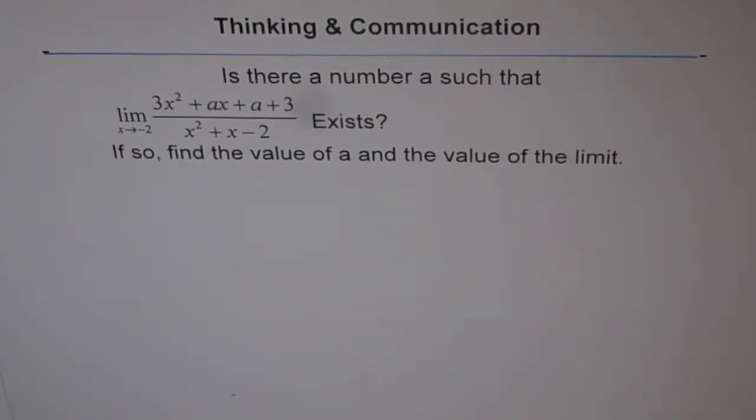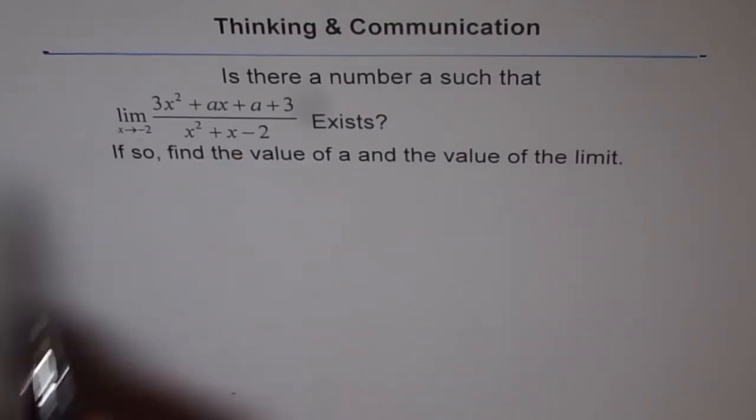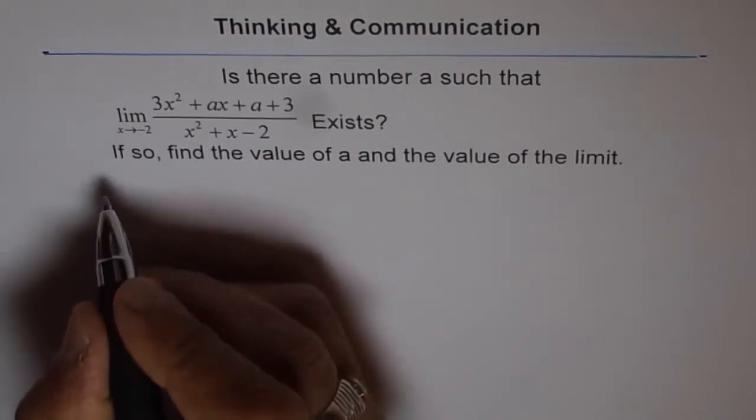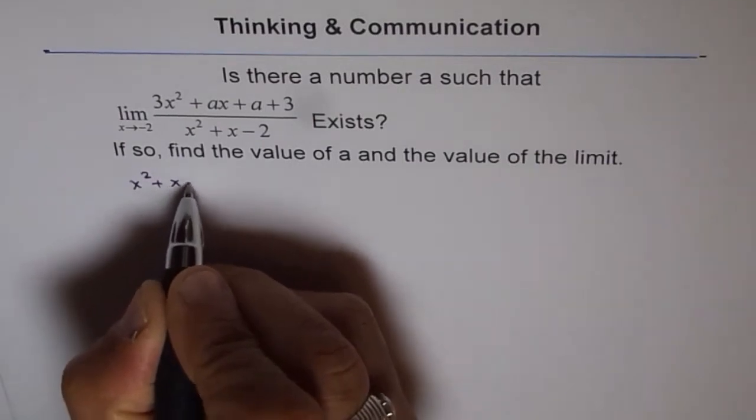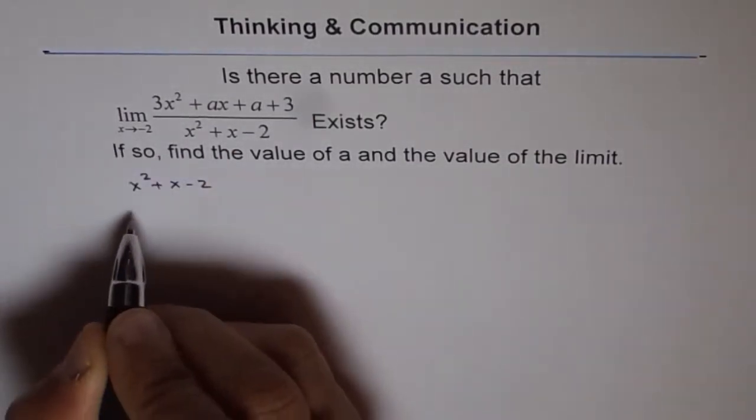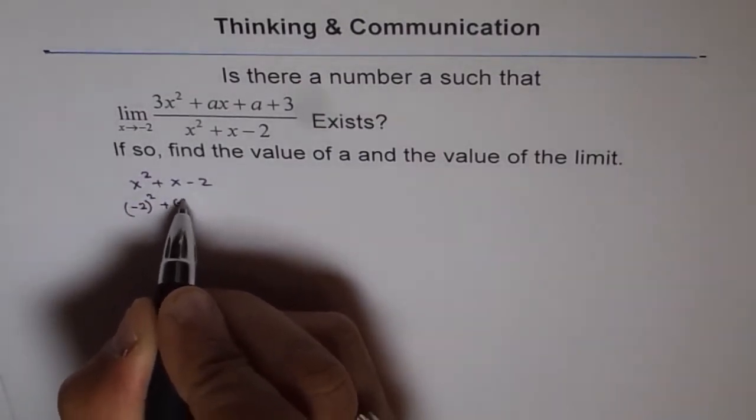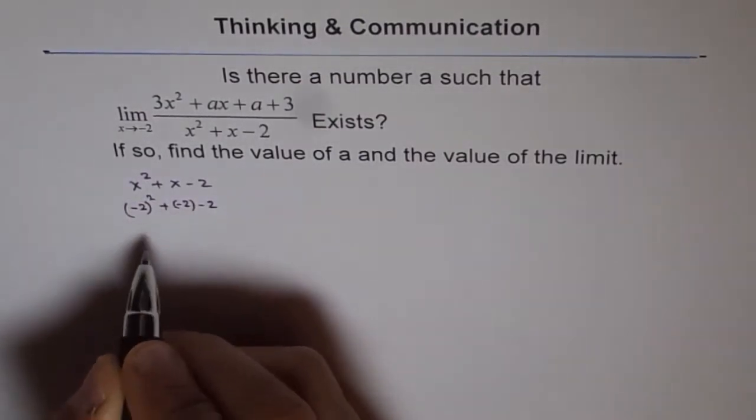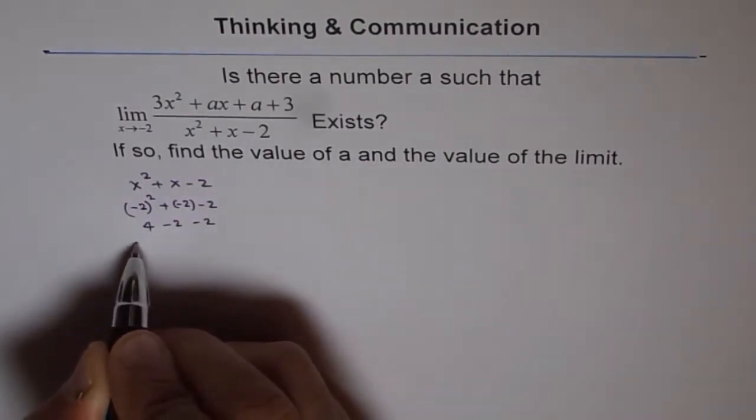This is a very interesting question and it is based on the concepts which you have been using so far. Now, let's try to examine the denominator. What happens to the denominator at x equals to minus 2? So, the denominator for us is x square plus x minus 2. If I plug in minus 2 here, I get minus 2 square plus minus 2 minus 2 which is 4 minus 2 minus 2 which is equal to 0.